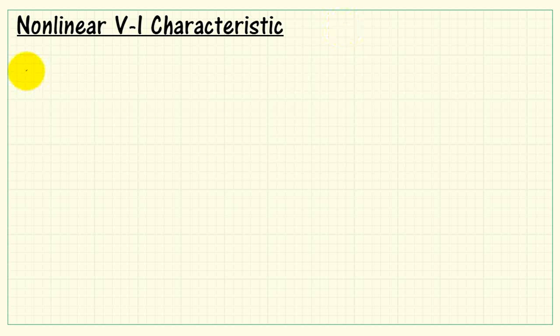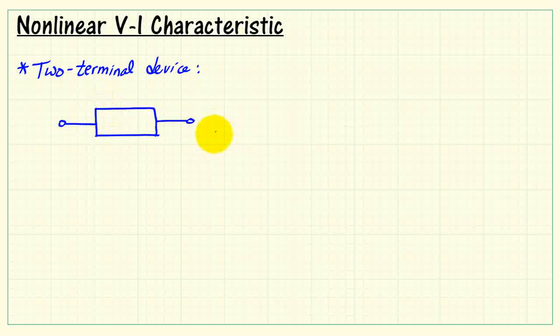Let's consider the voltage current characteristic, especially for non-linear two-terminal devices. Here's my symbol for a generic device, linear or non-linear. It has a voltage drop V and a current that passes through it, which is denoted I.